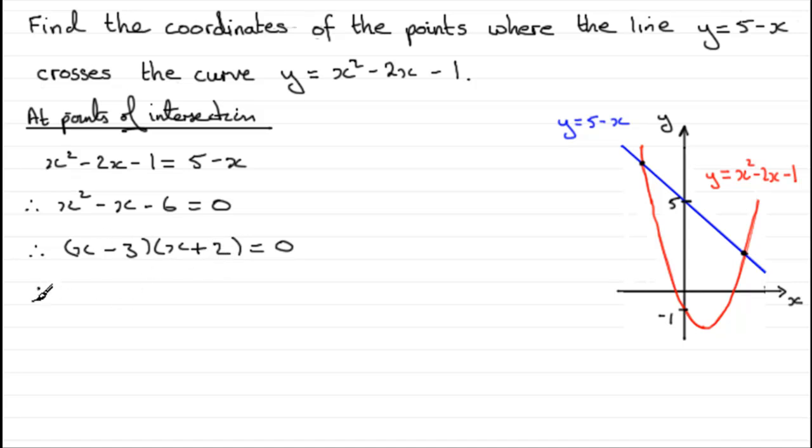So each factor would equal 0, so we've got x minus 3 equals 0 or x plus 2 equals 0, and that would lead to x equaling 3 or x equaling minus 2.